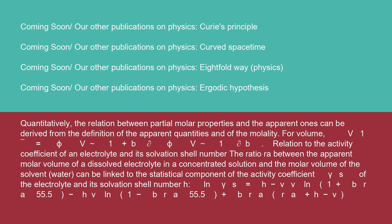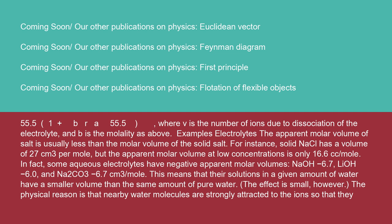can be linked to the statistical component of the activity coefficient γₛ of the electrolyte and its solvation shell number H: ln γₛ = (H - ν/ν) · ln(1 + B·RA/55.5) - H·ν · ln(1 - B·RA), where ν is the number of ions due to dissociation of the electrolyte and B is the molality.